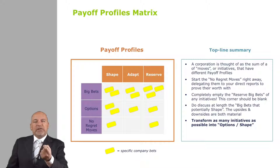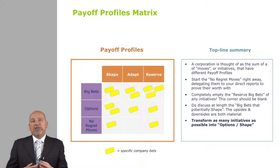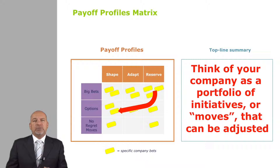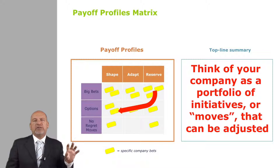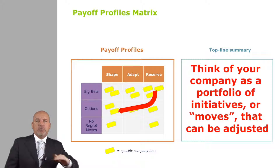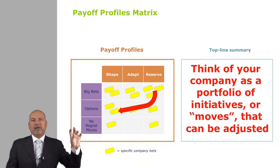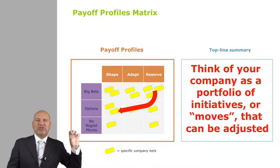In summary, what you have here is effectively a 21st century version of the BCG share-growth matrix. It's a portfolio optimization tool that relies less on numbers and more on the intellectual flexibility of the participants to create slightly different versions of the initiatives they are currently contemplating. You eliminate the no-regret moves, stop big bets that only reserve the right to play, turn them into something more shapey or more optional, talk a lot about your big bets to shape, and try to move all the other post-its towards options to shape. Thank you.